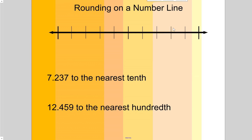Let's take a look at rounding decimals. We're going to start by rounding decimals on a number line. My first example is seven and two hundred thirty-seven thousandths, rounded to the nearest tenth. That means it's between seven and two tenths and seven and three tenths, so I need to figure out where seven and two hundred thirty-seven thousandths fits on this number line.